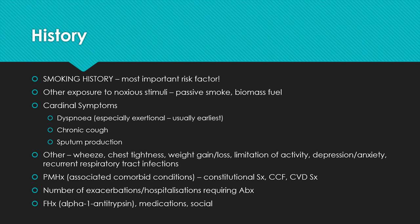Other symptoms include wheeze, chest tightness, weight gain or loss, limitation of regular activities, depression and anxiety — which happens very commonly in COPD — and recurrent respiratory infections, as well as associated comorbidities like cardiac failure and cardiovascular symptoms. The number of exacerbations or hospitalizations requiring antibiotics is important for assessing disease severity and therefore treatment options, as well as family history. In COPD caused by alpha-1 antitrypsin deficiency, family history plays quite a large role. Also ask about medications and social history.